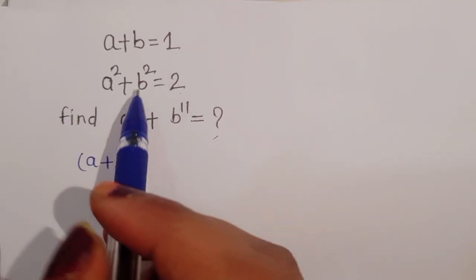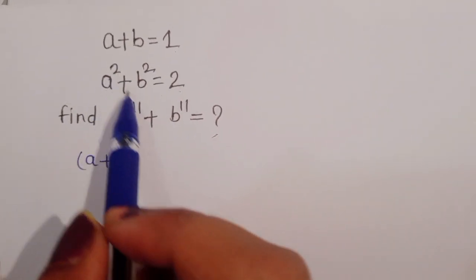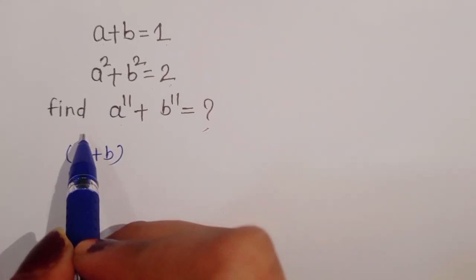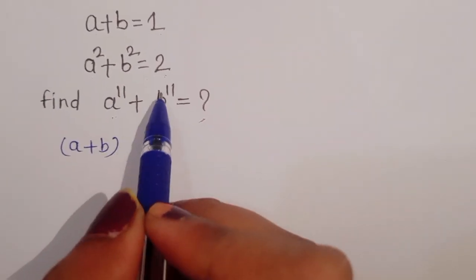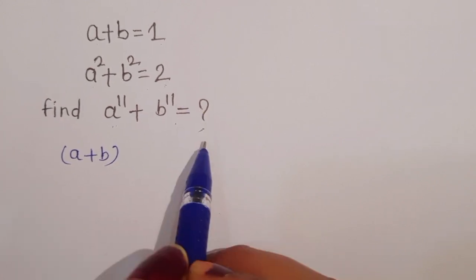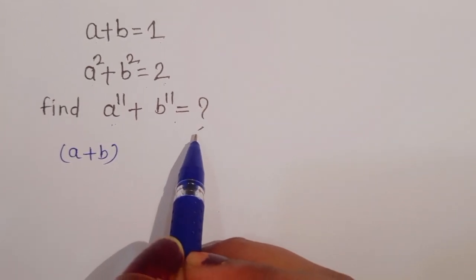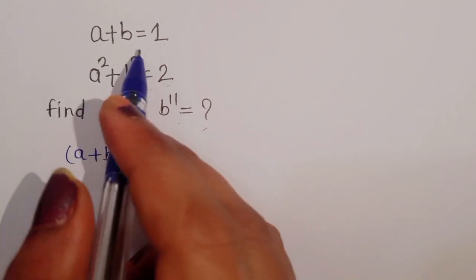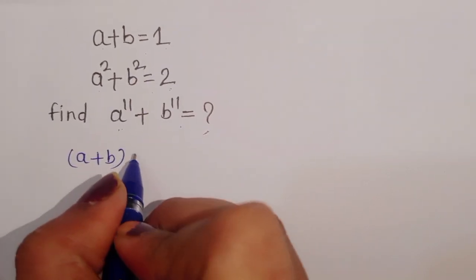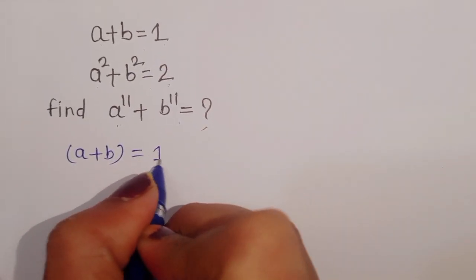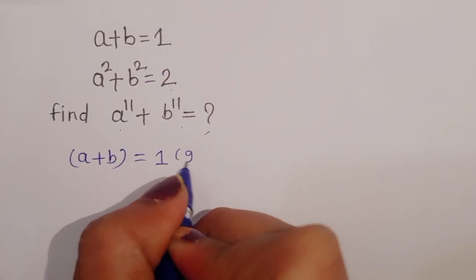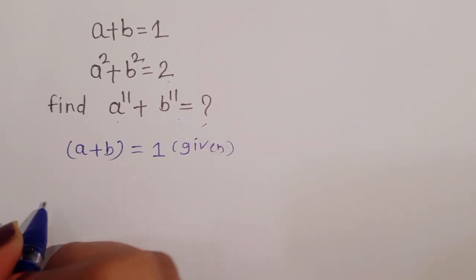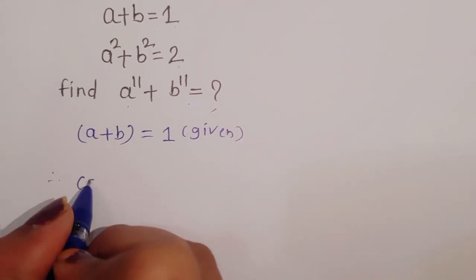a plus b is equal to 1 and a square plus b square is equal to 2. We have to find out the value of a power 11 plus b power 11. First we have to see what is given here: a plus b is equal to 1.